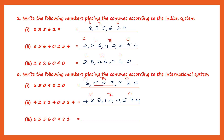Next one, let's write down: six, three, five, six, zero, nine, eight, one. The places are ones, tens, hundreds, thousands, ten thousands, hundred thousands, million, ten million. Let's place our commas — after three digits, comma, then three digits, comma. The ones period, the thousands period, and the millions period. So how do we read this? Sixty-three million, five hundred and sixty thousand, nine hundred and eighty-one.